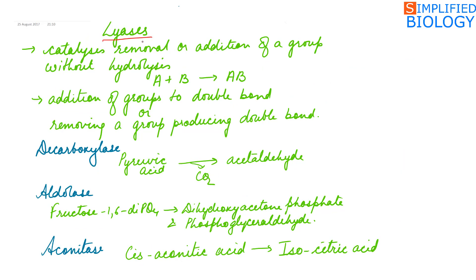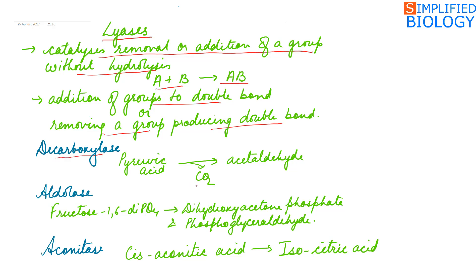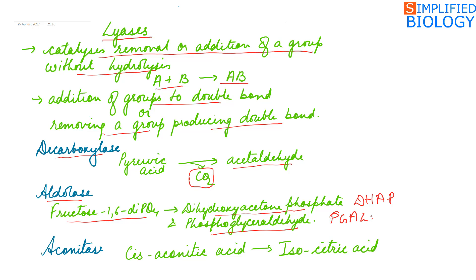Next, Lyases. They catalyze the removal or addition of a group without hydrolysis — meaning they can join or break down substances without using water, by addition of a group to a double bond or removing a group to produce a double bond. Example: decarboxylase, where pyruvic acid undergoes decarboxylation — the CO₂ group is removed to form acetaldehyde, as studied in anaerobic respiration. Another example is aldolase, which breaks down fructose-1,6-diphosphate into dihydroxyacetone phosphate and phosphoglyceraldehyde, as studied in glycolysis.